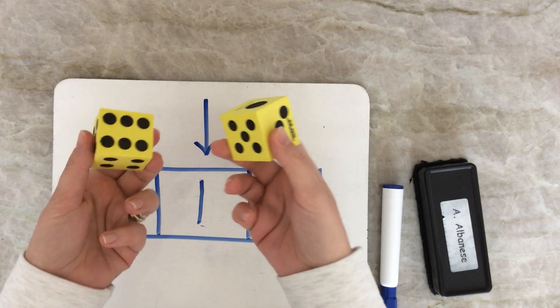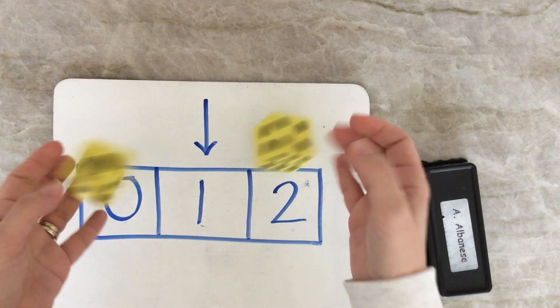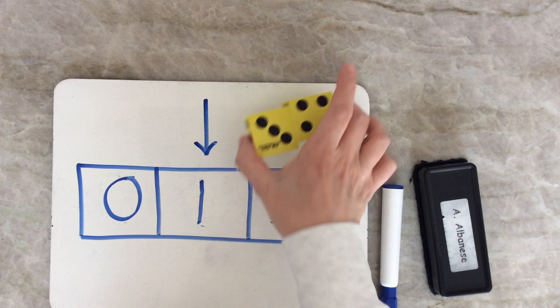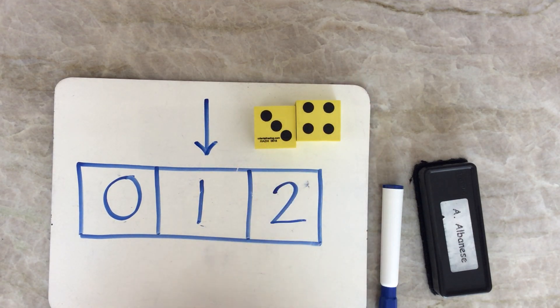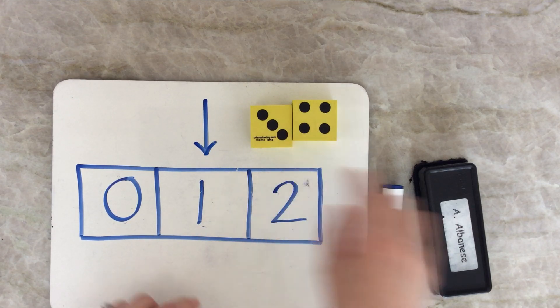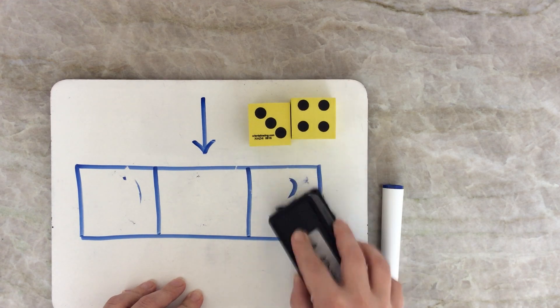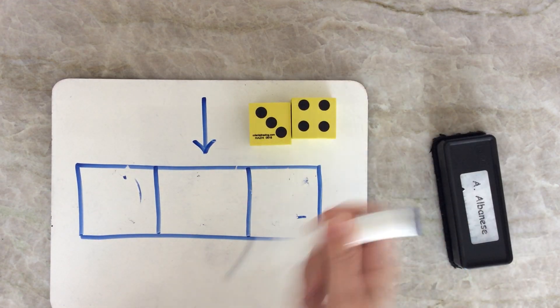Now remember, you can try playing this game with two dice. What you would do is you would roll both of them and add up the numbers. Do you know what three plus four is? We're learning addition this week. It's seven. So in the middle box, I would write seven.